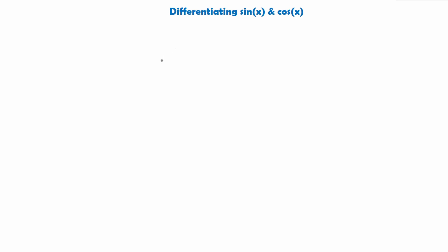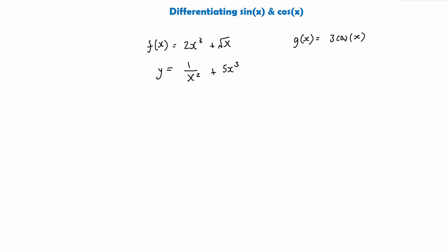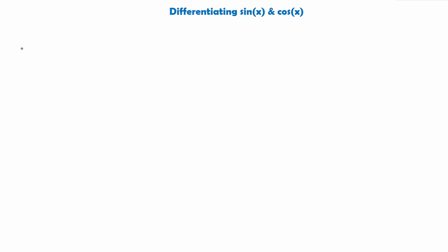So far in our differentiation topic we have been looking at differentiating equations that might look something like this — values in terms of x, with nothing to do with sine or cos. But what if we have a function that says something like g of x equals 3 cos x? How on earth would we differentiate this with respect to x? That is what we're going to be covering in today's video, and we're going to start off by doing a bit of a definition with two very important rules for differentiating sine x and cos x.